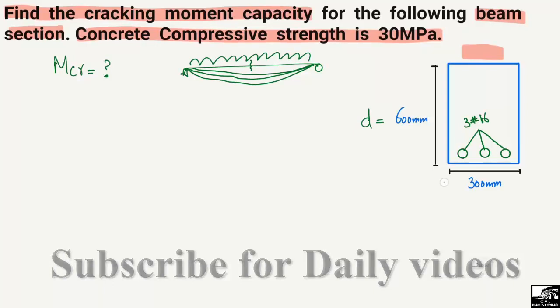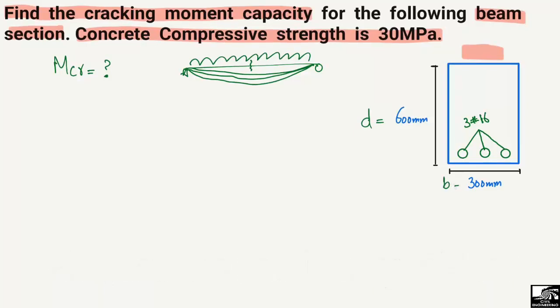The depth of the beam is 600 mm, the width is 300 mm, and there are three number-16 bars. To find the cracking moment capacity, the formula is: cracking moment capacity equals the concrete tensile strength multiplied by the section modulus.